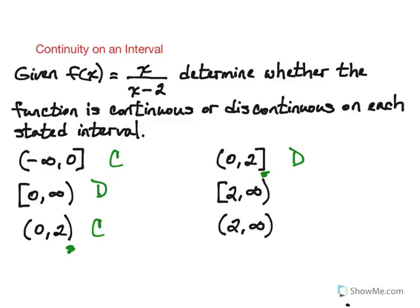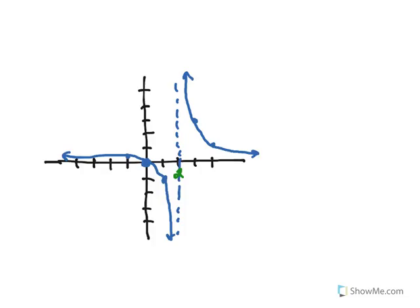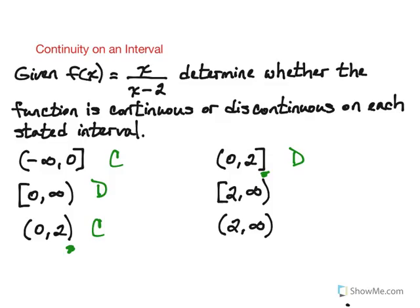Something similar is going to happen with the next two intervals we are going to consider. If we consider the interval that is closed on 2 through infinity, well we're starting where the asymptote is and we are including that value of 2. That's what poses the problem because there's the asymptote there. So we would have to say this particular interval is discontinuous.